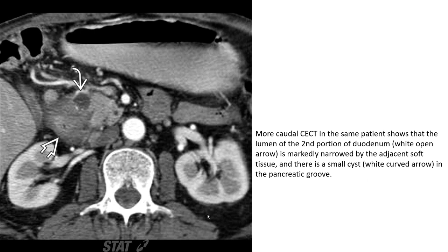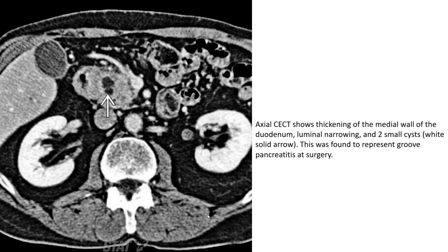More caudal contrast-enhanced CT in the same patient shows that the lumen of the second portion of the duodenum — wide open arrow — is markedly narrowed by adjacent soft tissue, and there is a small cyst — wide curved arrow — in the pancreatic groove. Axial CT also shows thickening of the medial wall of the duodenum, luminal narrowing, and two small cysts — wide solid arrow — found to represent groove pancreatitis at surgery.